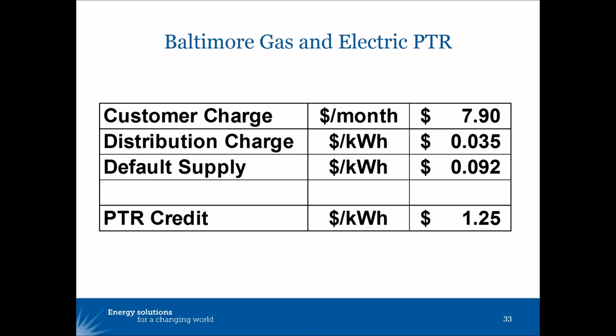Here we see an example of a peak time rebate from Baltimore Gas and Electric, showing the monthly customer charge, their energy delivery charge or distribution charge, and then the volumetric energy charge. Baltimore Gas and Electric offers a gigantic credit to those customers that can reduce their energy usage during these peak times: $1.25 per kilowatt hour.